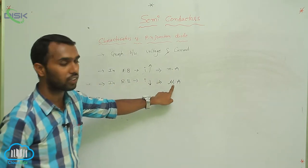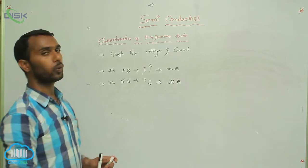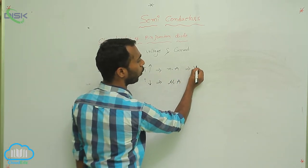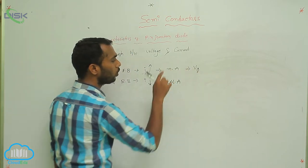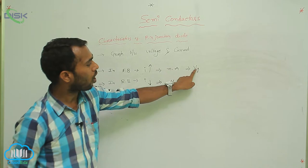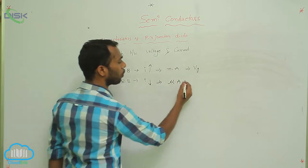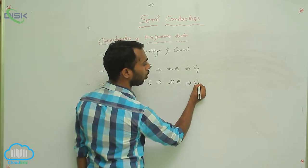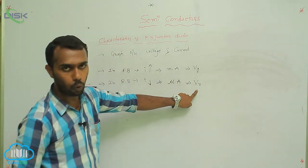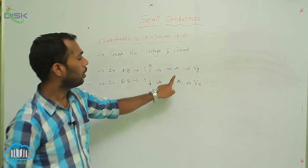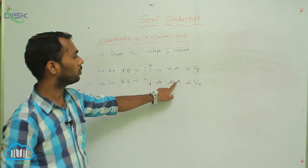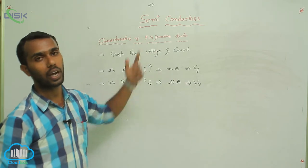In reverse bias, current is less, in microampere we have to take. In forward bias, the applied voltage is called forward voltage. In reverse bias, the applied voltage is called reverse voltage. In forward bias current is in milliampere; in reverse bias it is in microampere.